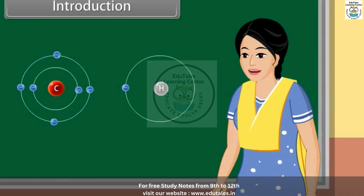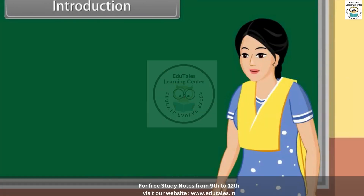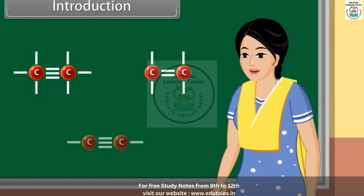Organic chemistry is the branch of chemistry that involves the study of carbon and hydrogen-containing compounds. The carbon-carbon atoms are attached by single bond, double bond or triple bond, and the functional group present on the organic compound decides its chemical nature.